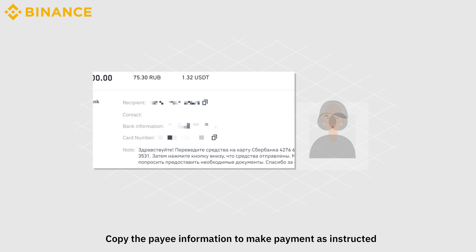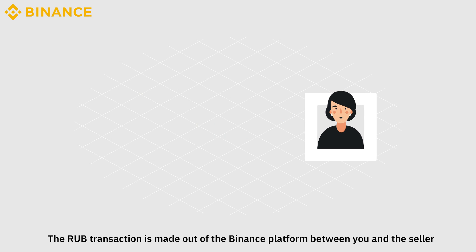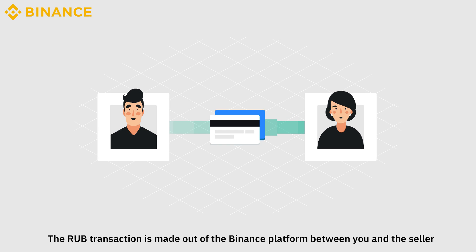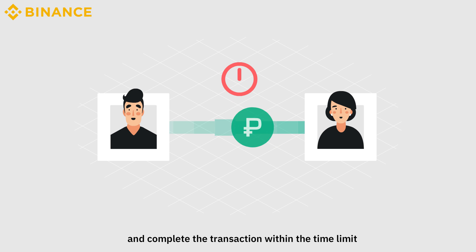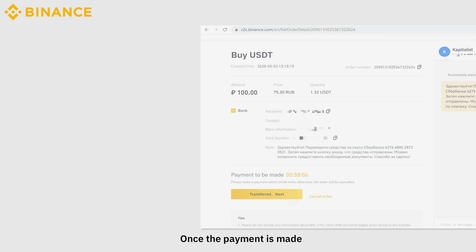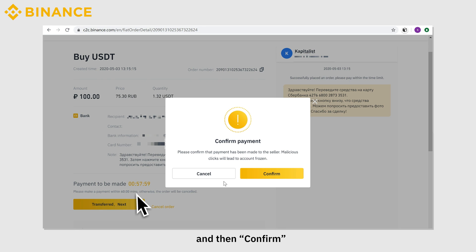Copy the payee information to make payment as instructed. The RUB transaction is made outside of the Binance platform between you and the seller. Please double-check the payee information and complete the transaction within the time limit. Once the payment is made, click on Mark as Paid and then Confirm.